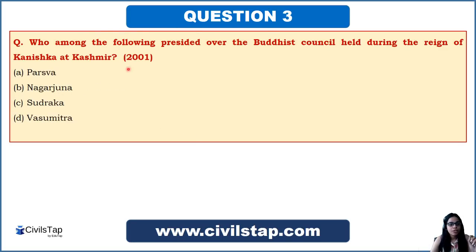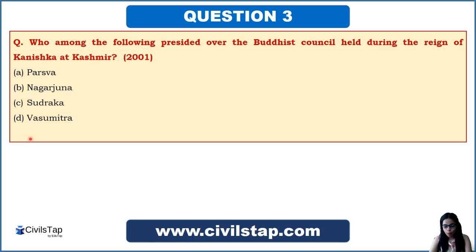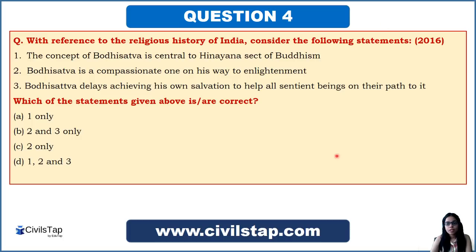This question came in the Prelims of 2001: 'Who among the following presided over the Buddhist council held during the reign of Kanishka at Kashmir?' From our study of the Buddhist councils, the Fourth Buddhist Council held under Kanishka was presided over by Vasumitra. So the answer is option D. Also, in this council, the Mahayana school of Buddhism evolved.